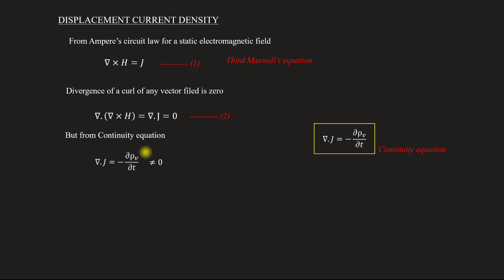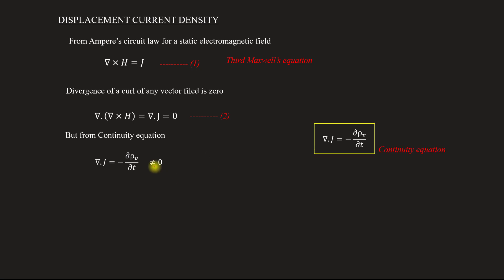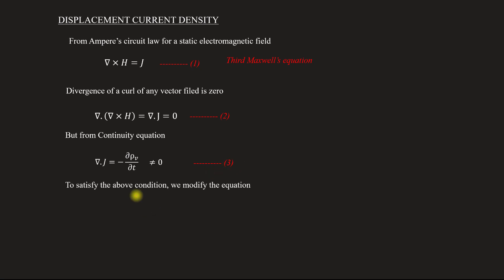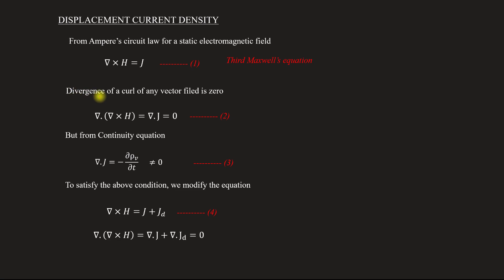When we encounter this conflict, we will rectify the equation. What we are doing is rearranging the equation. Let this be equation number 3. If I do this, I satisfy equation number 1. So, del cross H equals J. I will add an additional term JD. Let it be equation number 4. If I take the divergence, del dot (del cross H) equals del dot J plus del dot JD, which equals zero.